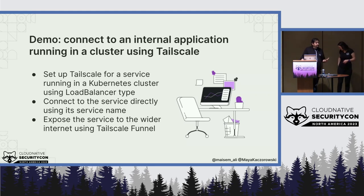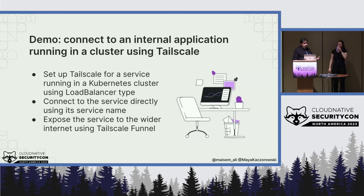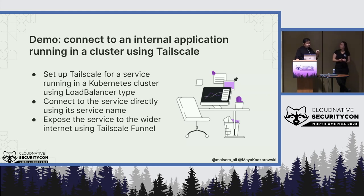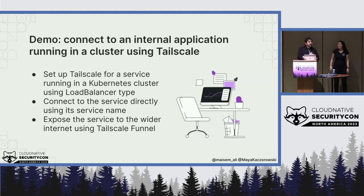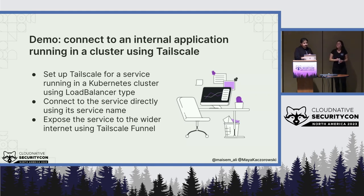Since we work at Tailscale, we're going to demo using Tailscale to reach a Kubernetes service internally. Tailscale is a WireGuard-based mesh VPN. Mesh network means that traffic doesn't go through a concentrator — connections are directly peer-to-peer, so you get better latency and there's no single point of failure. Because it's based on WireGuard, all connections are always end-to-end encrypted from any device to any other device. In this demo, we're going to set up a service in Kubernetes, then install the Tailscale operator, and using that operator, expose the service to our Tailnet.